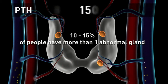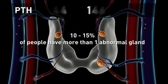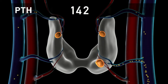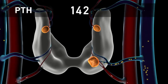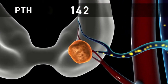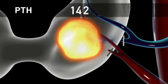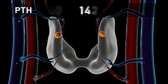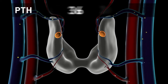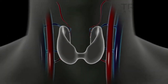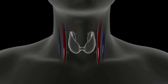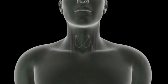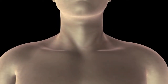Post-intraoperative PTH testing is critical because 10 to 15 percent of people have more than one abnormal gland. When PTH levels remain high after one enlarged gland is removed, Dr. Larian knows another abnormal gland is present. Once located, the second gland is removed and rapid PTH testing is redone to confirm success. PTH testing is vital to ensure the problem is completely resolved before surgery is deemed complete.